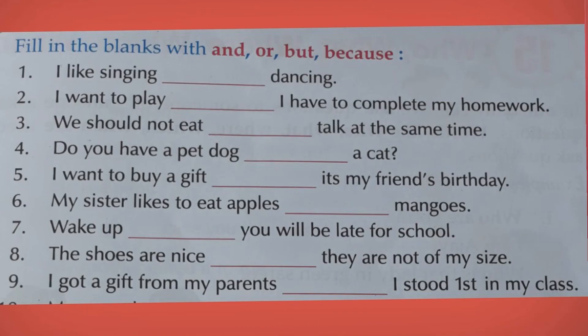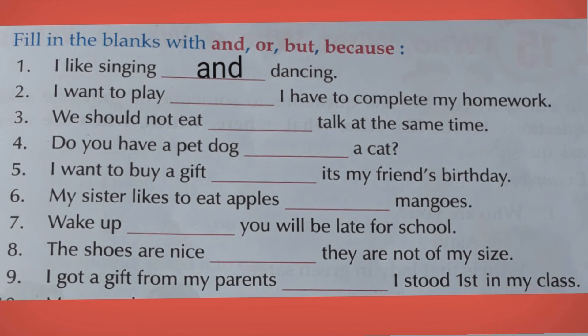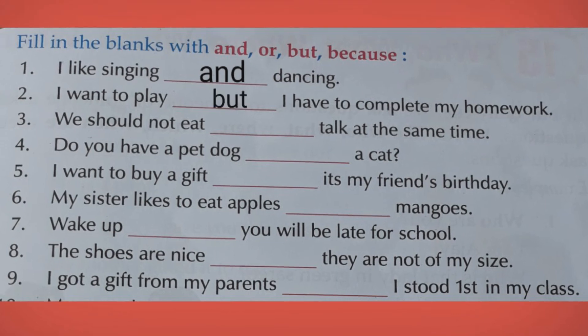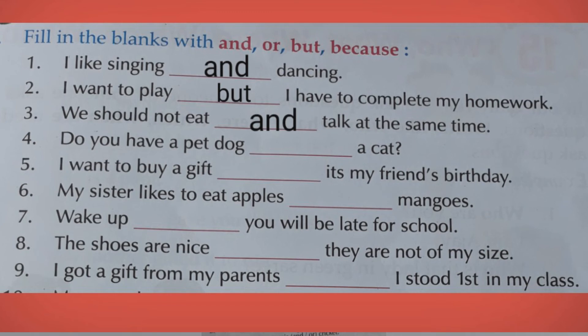Now let's do the exercises. Take your grammar textbook and turn to page number 39, Exercise 8. Fill in the blanks with and, or, but, or because. First: I like singing — dancing. Answer: and. I like singing and dancing. Second: I want to play — I have to complete my homework. Answer: but. Third: We should not eat — talk at the same time. Answer: and. We should not eat and talk at the same time.